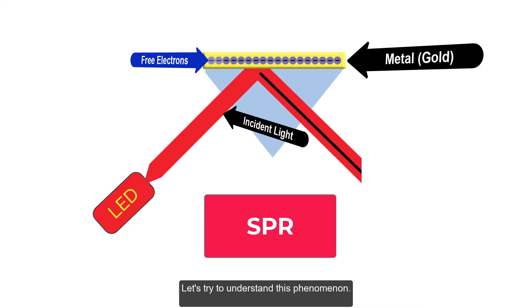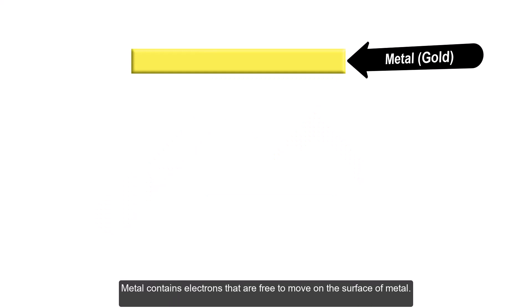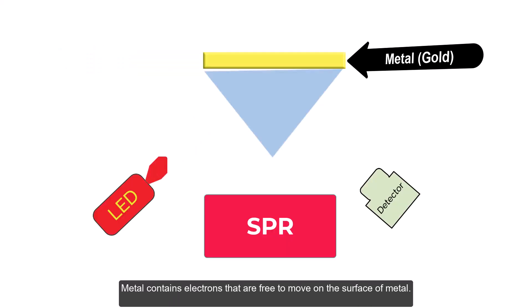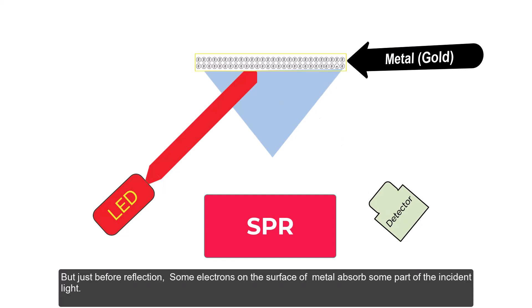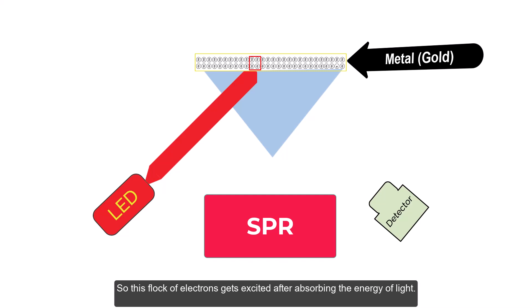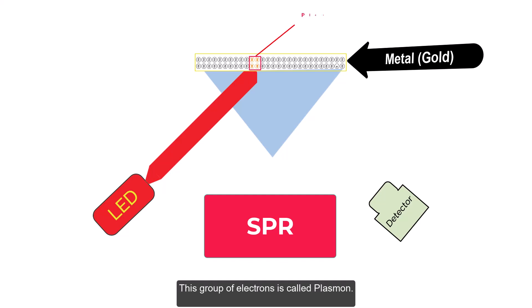Let's try to understand this phenomenon. Metal contains electrons that are free to move on the surface of metal. When light hits the metal surface, it gets reflected at an angle. But just before reflection, some electrons on the surface of metal absorb some part of the incident light, and this group of electrons gets excited after absorbing the energy of light. This group of electrons is called plasmon.